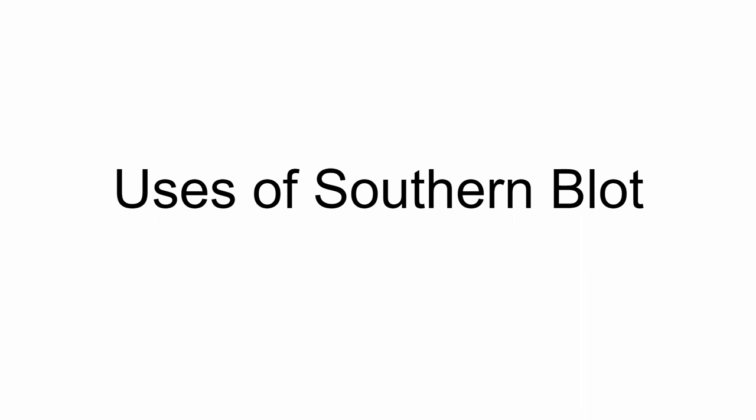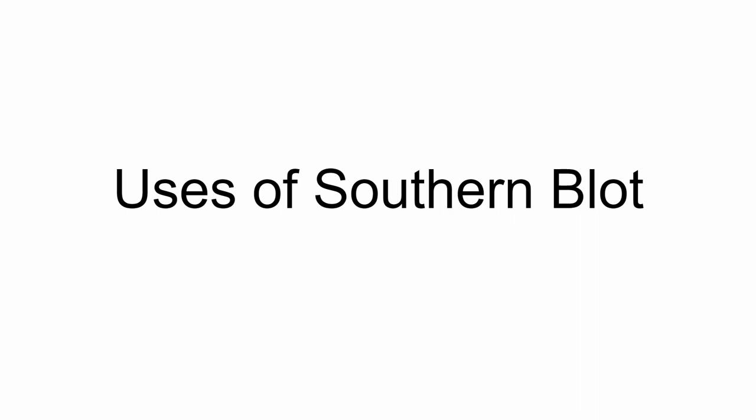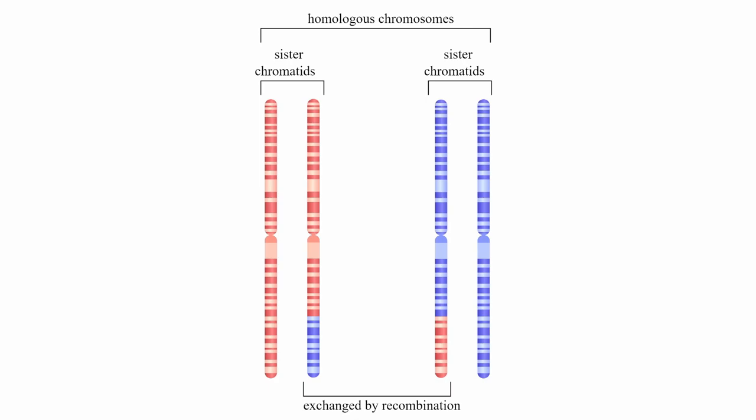Now I will explain some of the practical uses southern blot can offer. In a paper by Joe et al, we can see southern blotting being used to identify homologous recombination events in mouse embryonic cells. Many times, homologous recombination is used in gene editing to modify an organism's genome within a different gene.